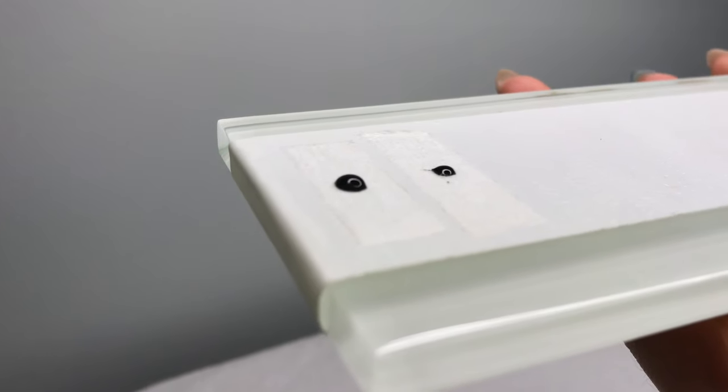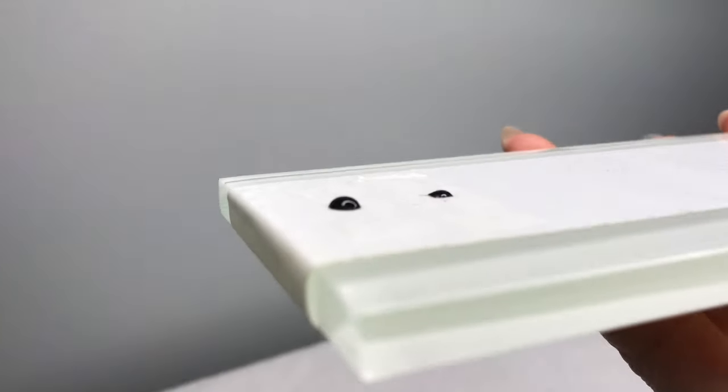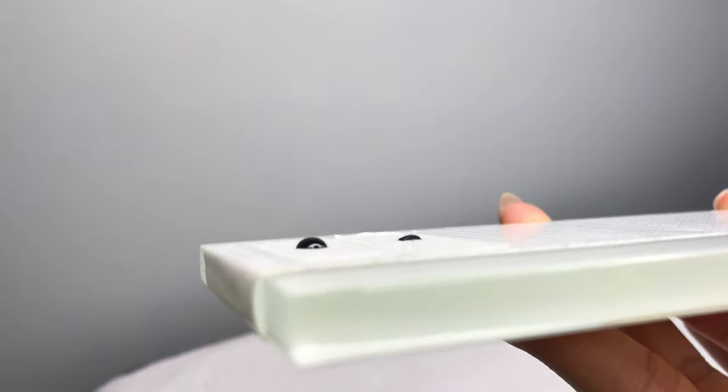A fresh glue dot looks like a perfect dome while an old glue dot looks deflated and deformed. An easy way to check is from its side view.